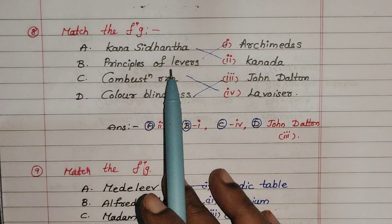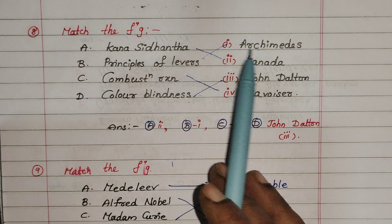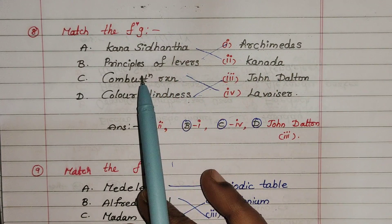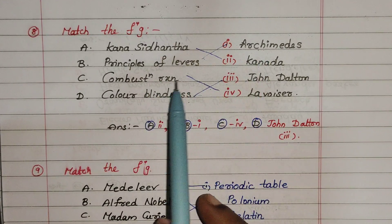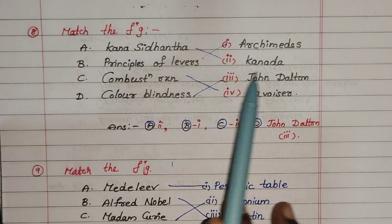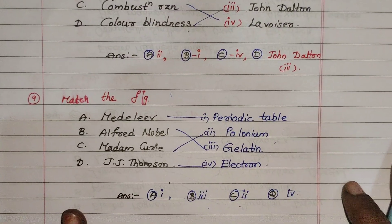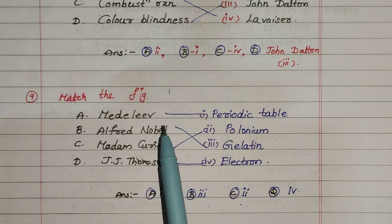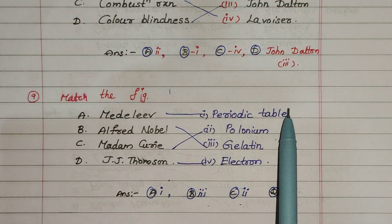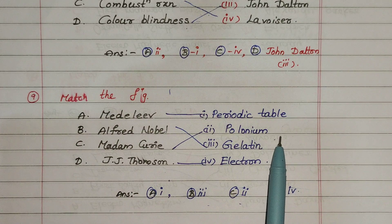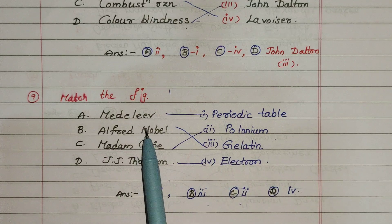Next question — concepts and scientist names: Principles of Levers — Archimedes; Combustion — Lavoisier; Colour Blindness — John Dalton; Atomic Theory — Kanada. Next, matching one-sided concept with scientist name: Mendeleev, Da Vinci, Madame Curie, JJ Thomson. Periodic Table Concept, Polonium Element, Gelatin Material, Electron Concept — Mendeleev's Periodic Table, Alfred Nobel — Gelatin.